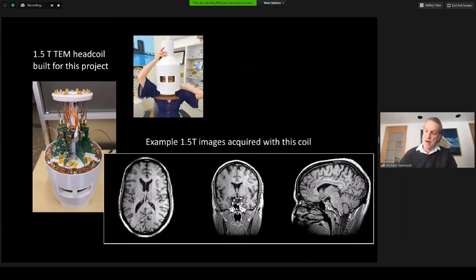Finally, we come to the RF coil that has been built for this system. It's based on Tommy Vaughan's TEM design. It's an 8-element TEM coil with integrated TR switches and preamps. It can operate in a circular polarized mode or in parallel transmit mode with up to 8 separate transmitter elements. Example 1.5-Tesla images acquired with this coil when using the 1.5-Tesla whole-body magnet at the CMRR are shown.